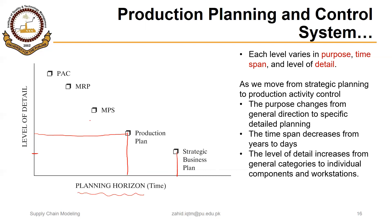In the strategic business plan we talk about different business units; in the production plan we talk about product families; in the MPS we talk about individual products within a specific family; and in MRP we talk about components and raw materials required to make an individual product. The planning horizon becomes progressively shorter while the level of detail increases at each stage.